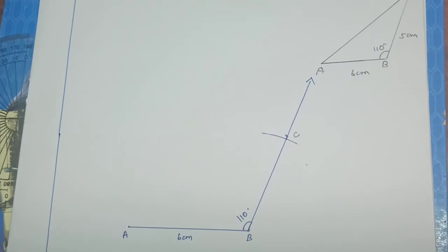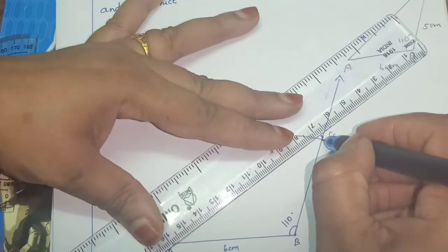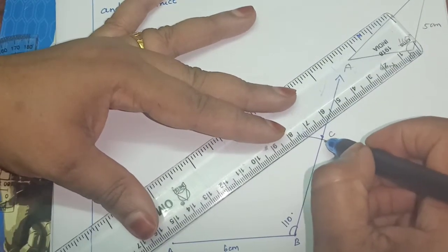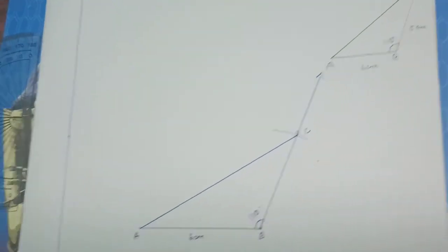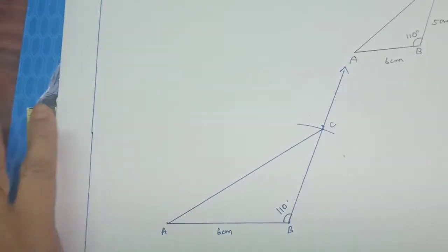So you have to join with A. So this is our triangle is ready, obtuse triangle. Now, the altitude construction, take your compass.